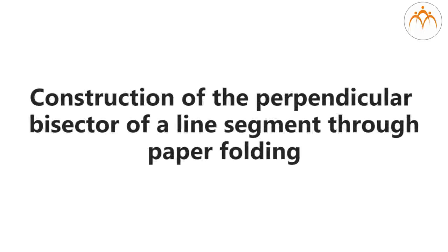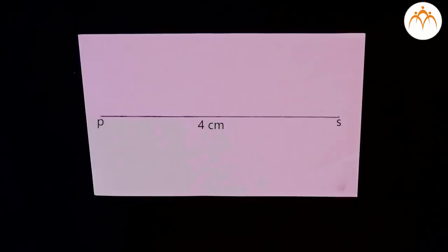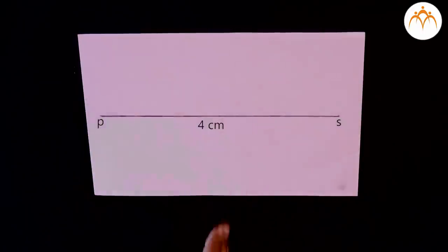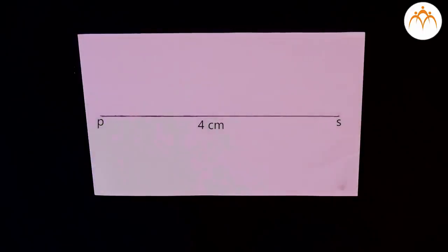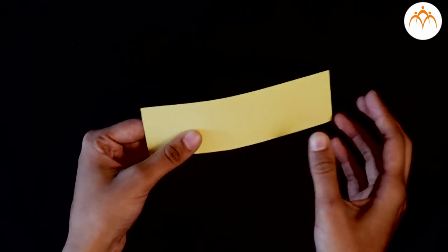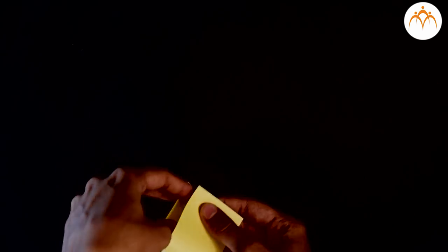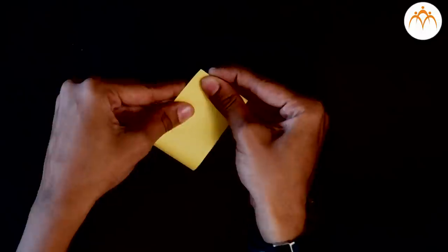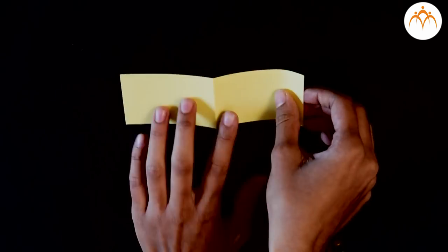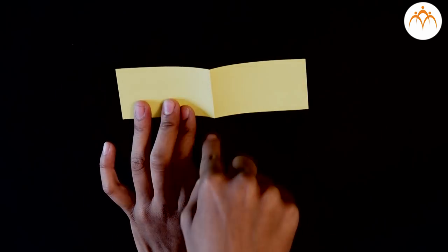Construction of the perpendicular bisector of a line segment through paper folding: draw a line segment PS having length 4 cm on a piece of paper. Fold the paper to match points P and S, and fix the fold using your fingers. Unfold the paper to get the crease line as the perpendicular bisector of segment PS.